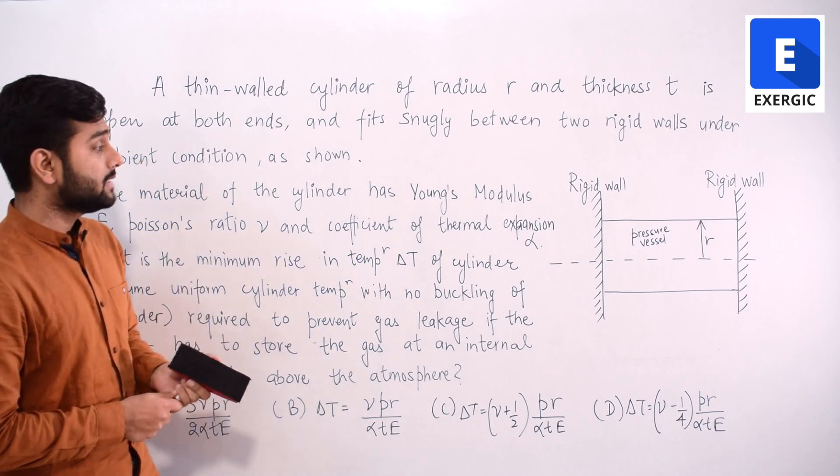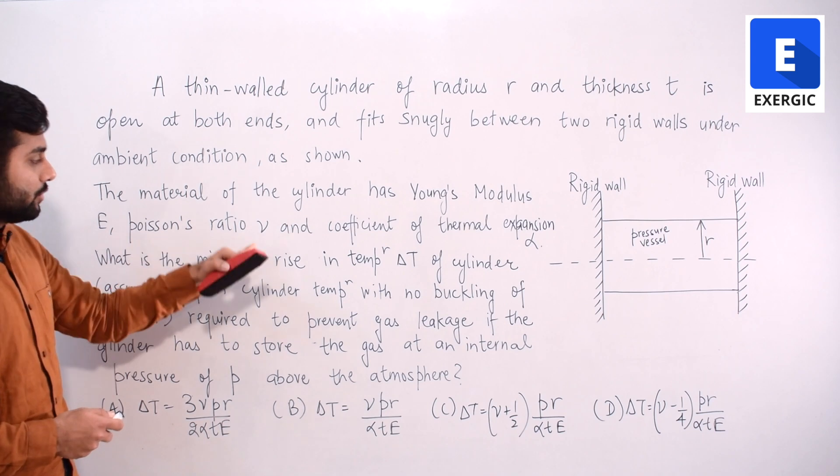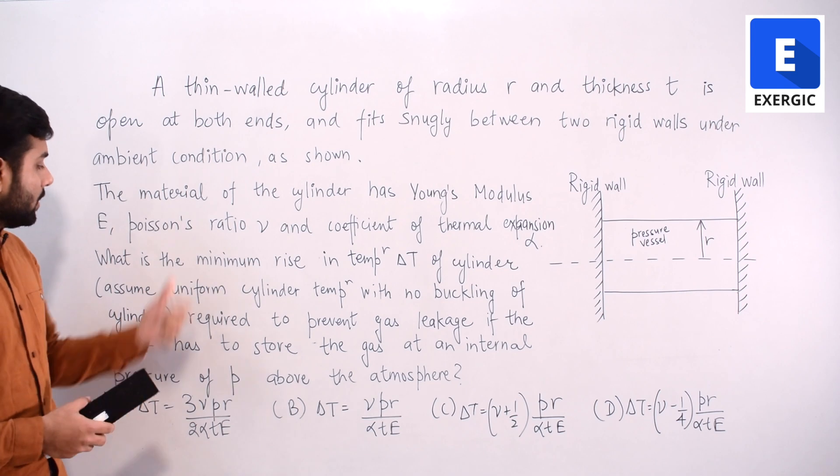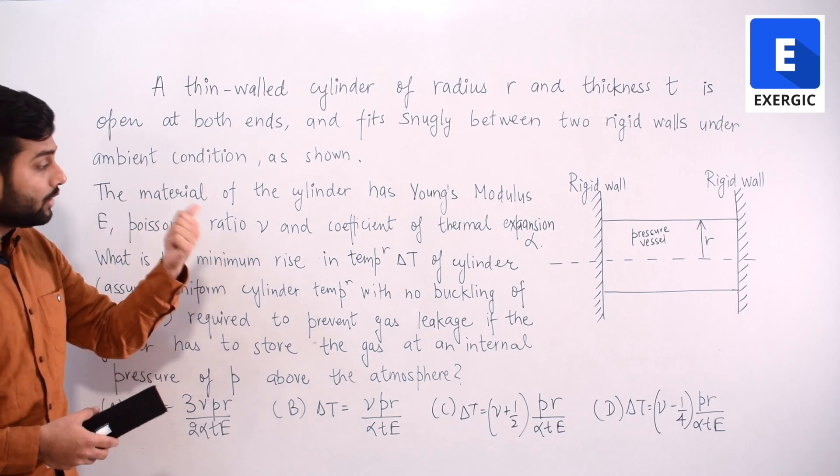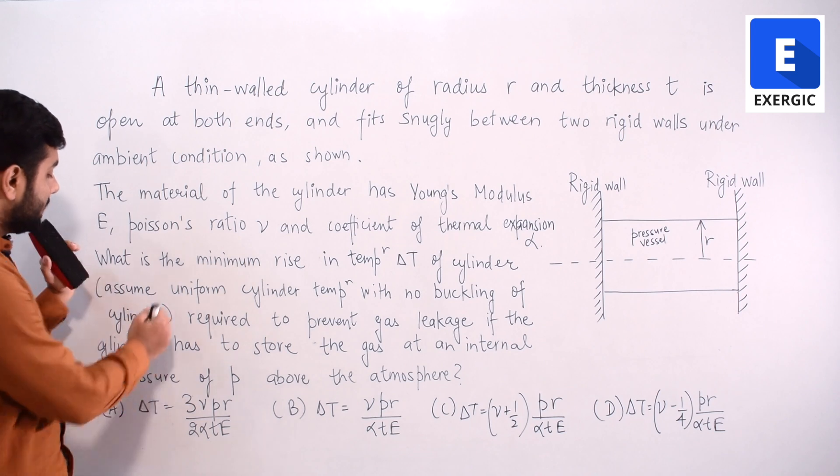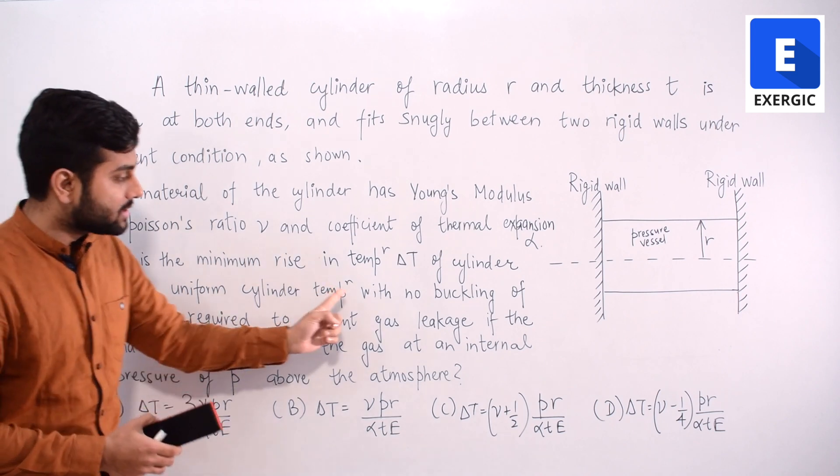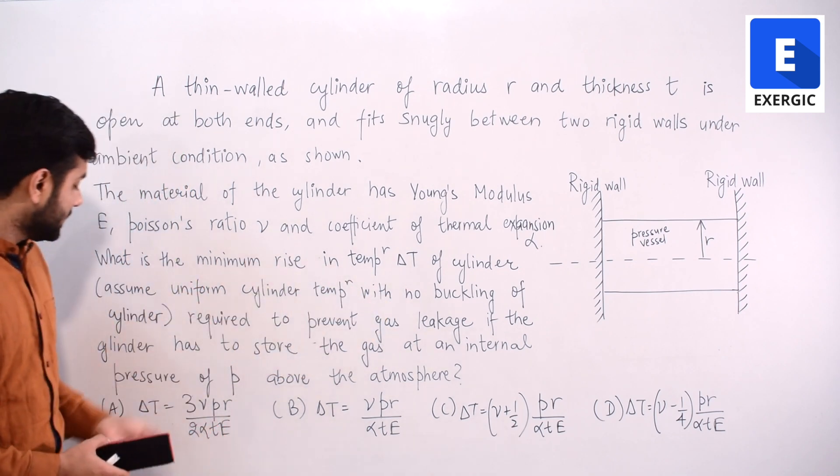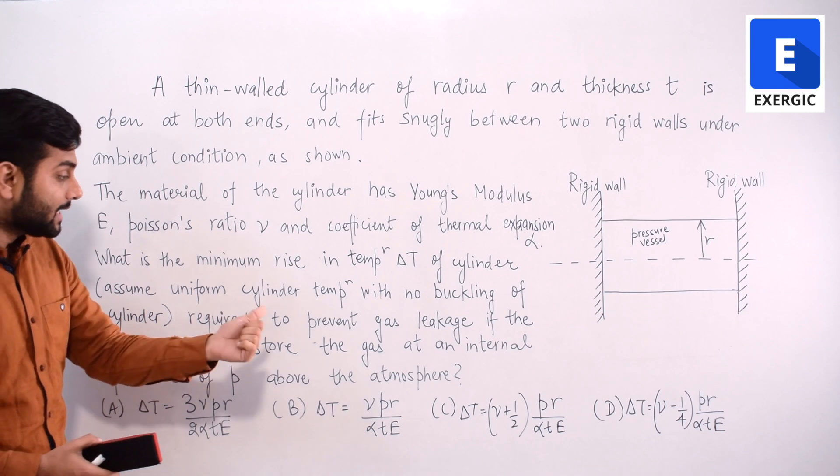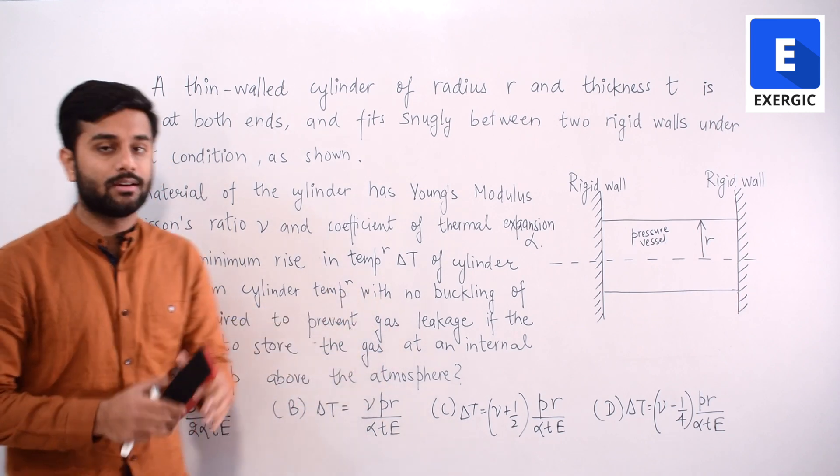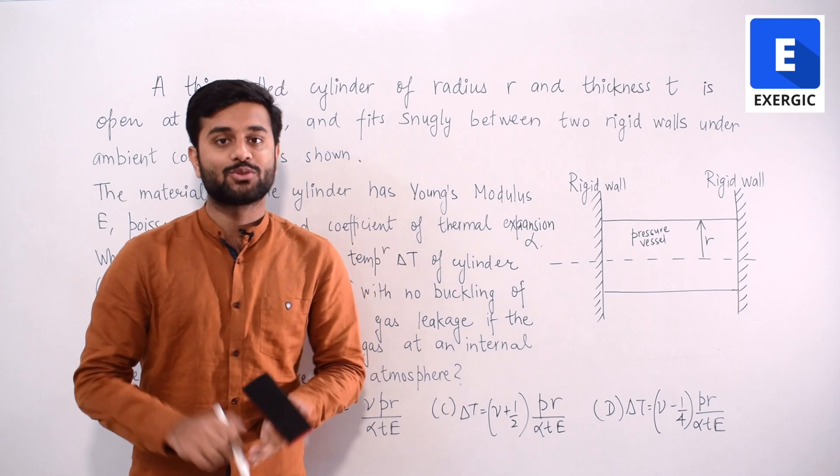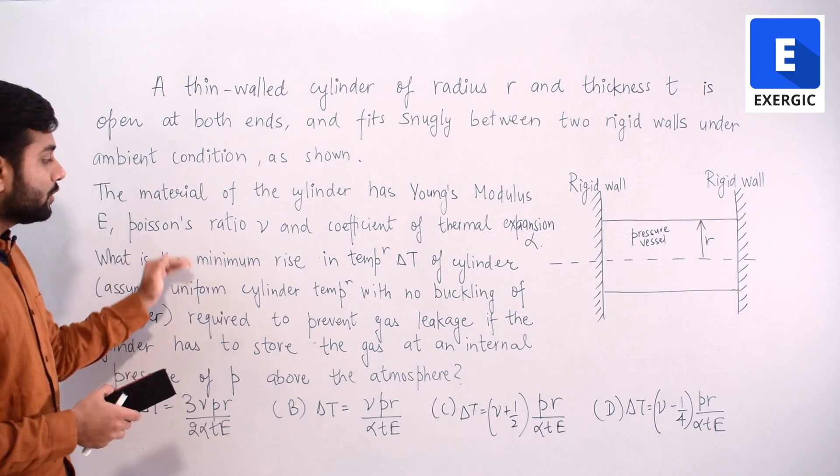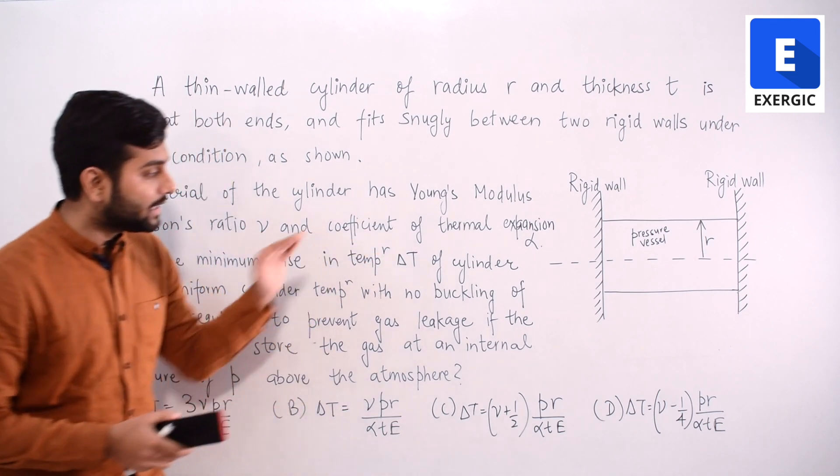The material of the cylinder has Young's modulus E, Poisson ratio nu, coefficient of thermal expansion alpha. It has defined all parameters. What is the minimum rise in temperature delta T of cylinder? In bracket it gave you: assume uniform cylinder temperature with no buckling of cylinder which is required to prevent gas leakage if cylinder has to store the gas at an internal pressure of P above the atmosphere. It's quite a lengthy line, so let's break it down.